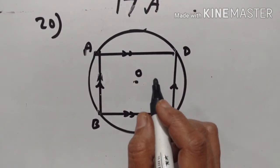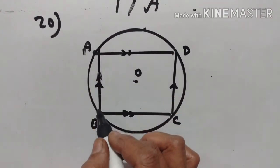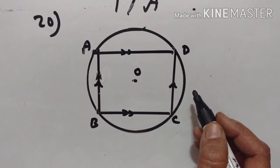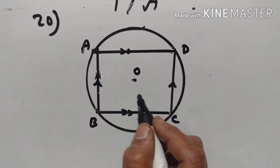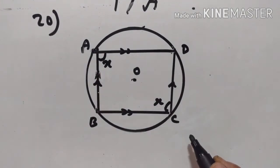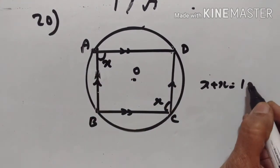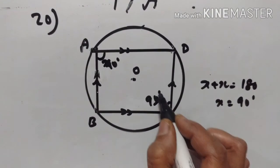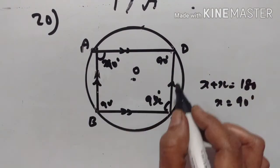20th problem. A parallelogram ABCD is inscribed in a circle. We have to prove that this parallelogram is a rectangle. In a parallelogram, opposite angles are equal, so let angle A equal angle C equal X. But this is also a cyclic quadrilateral, so opposite angles are supplementary: X plus X equals 180, therefore X equals 90 degrees. Similarly, angle B and angle D are each 90 degrees. Therefore ABCD is a rectangle.